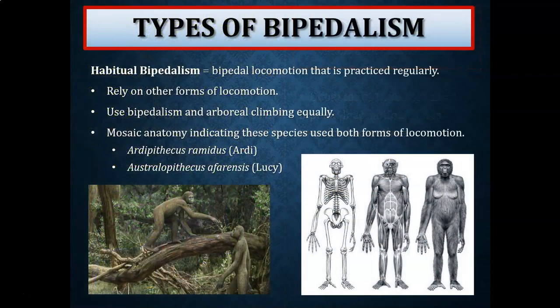The next type is habitual bipedalism — bipedal locomotion that is practiced regularly. However, these bipeds also rely on other forms of locomotion, using bipedalism and arboreal climbing equally. It is likely that our earliest bipedal ancestors were habitual bipeds, so we're going to see this very mosaic, mixed anatomy indicating that these early hominins utilized both forms of locomotion.